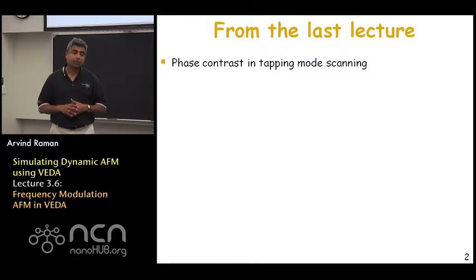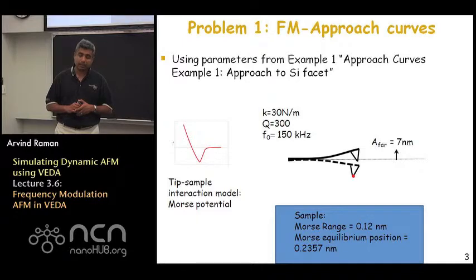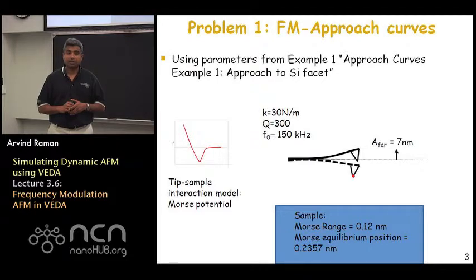There is an approach and retraction tool and then there is a scanning tool which both work very much in the same way as discussed some classes ago. We will perform two simulations today to give you an idea of how you would use the frequency modulation scanning tool. In the first example we are going to load the frequency modulated approach curve tool and the parameters used for the simulation are given in the appendix. We are going to approach this on a silicon surface.